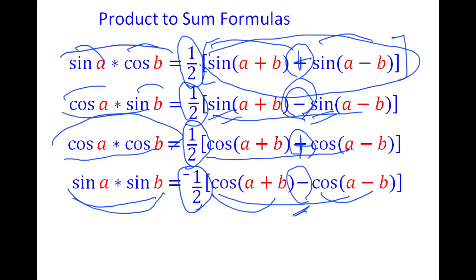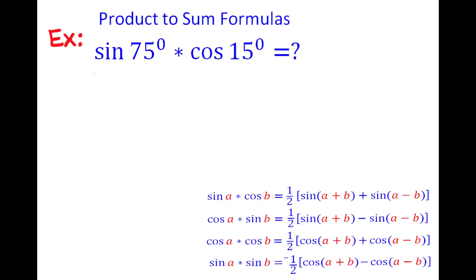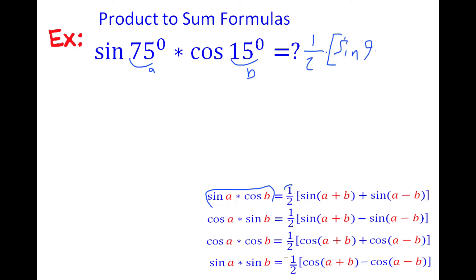Let's look at our first example: sine(75°) times cosine(15°). If we think of 75° as a and 15° as b, then our expression matches the formula sine a times cosine b. Applying the formula gives us 1/2 times [sine(75+15) + sine(75−15)], which is 1/2 times [sine(90°) + sine(60°)].